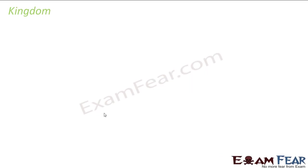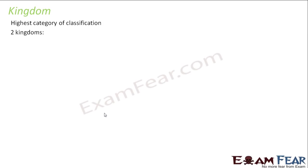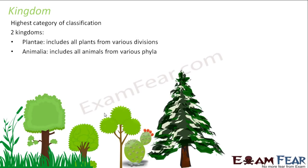Now we will talk about the highest level of the hierarchy — that is kingdom. It is the highest category of classification. Broadly, in the older system of classification, scientists used to say that there are broadly two kingdoms in the entire variety of living organisms: the plant kingdom and the animal kingdom. Plant kingdom was known as Plantae and the animal kingdom was known as Animalia. Plant kingdom included all plants from various divisions, which in turn contain classes, orders, families, genera, and species.